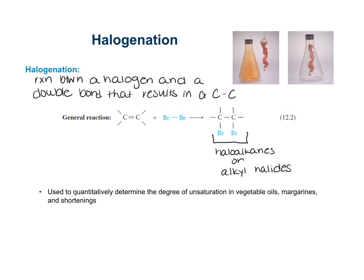An example of one of these reactions: fat like the fat of bacon contains double bonds. In a flask filled with bromine — which is orange in color — when you put the bacon in, the bromine reacts with the fats of the bacon. This is used quantitatively to determine the degree of unsaturation in vegetable oils, which is really just the number of double bonds.